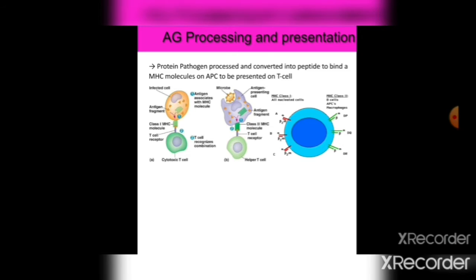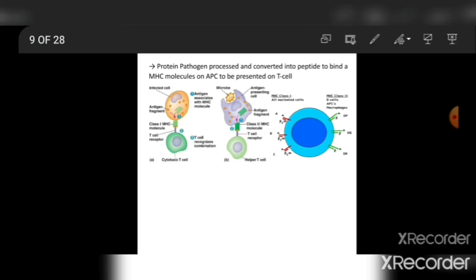In antigen processing and presentation, protein pathogens are processed and converted into peptides that bind to MHC molecules on the APC, to be presented to T cells. Infected cells display antigen fragments via MHC class I molecules to T cell receptors. Antigens associated with MHC molecules are recognized by T cells, leading to formation of cytotoxic cells. Microbes are engulfed by antigen-presenting cells, which present antigen fragments via MHC class II molecules to T helper cells.